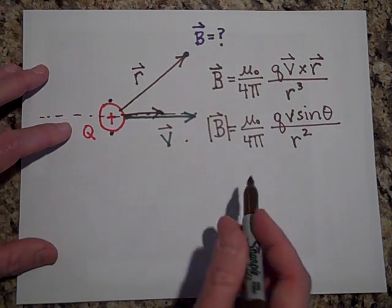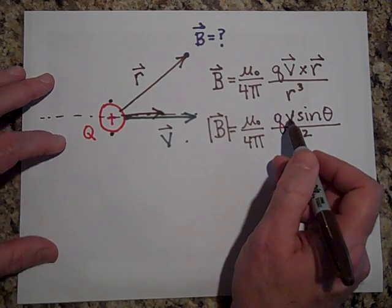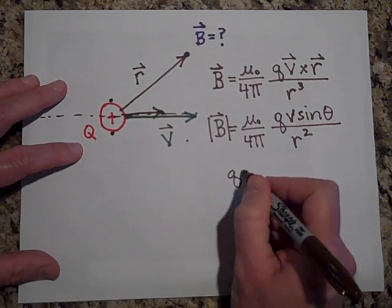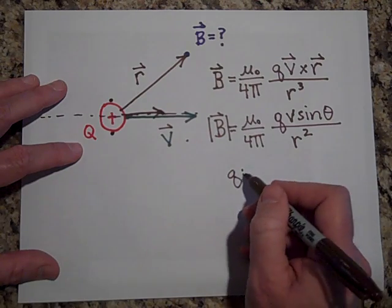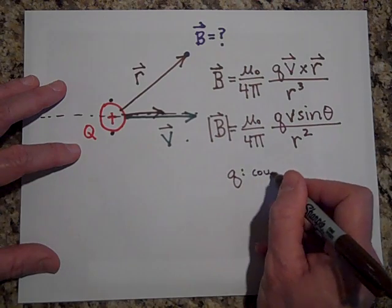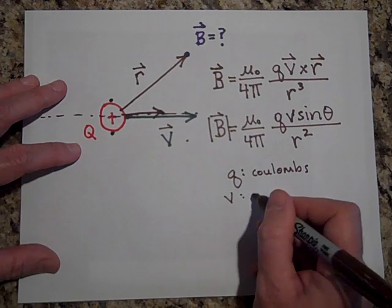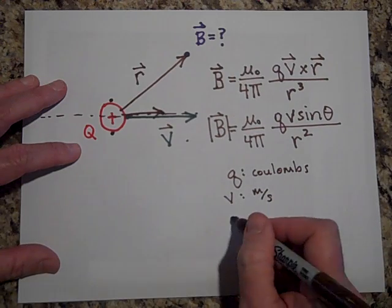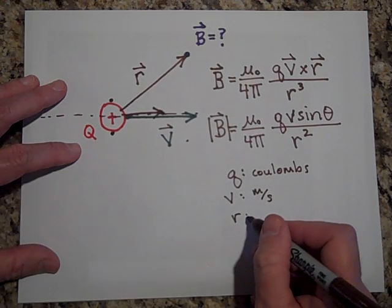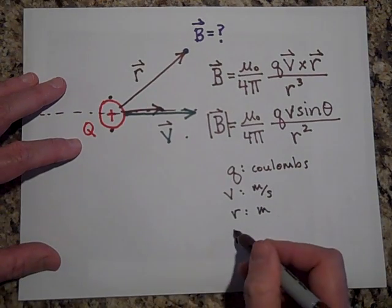So when you do this, if Q is in Coulombs, Q is charge, and we'd like that to be in Coulombs. And if V is in meters per second, and if R, the distance, is in meters, then what you get is B will be in Teslas.